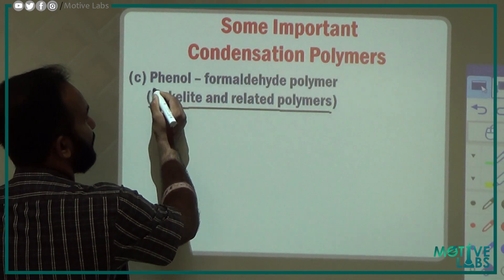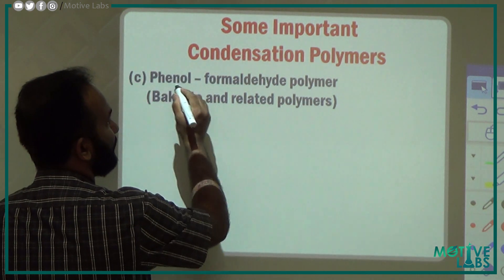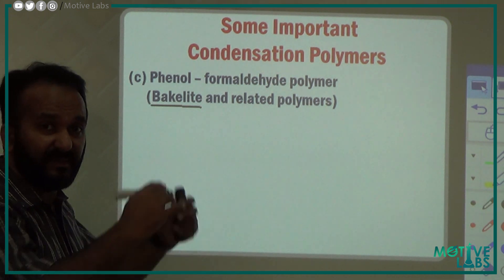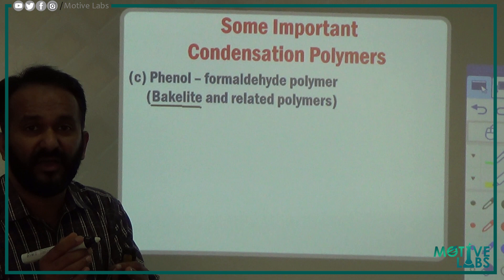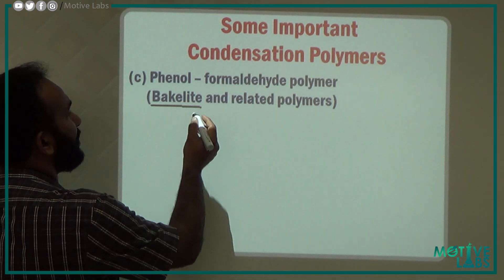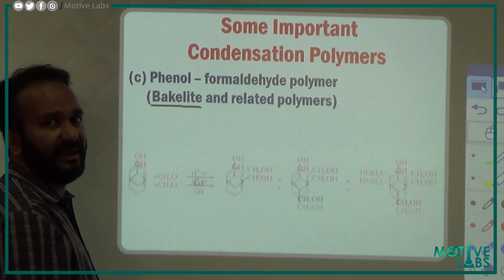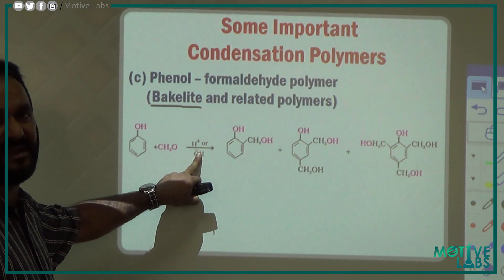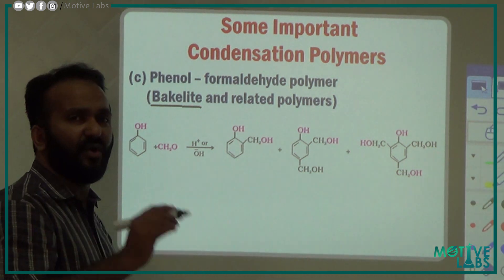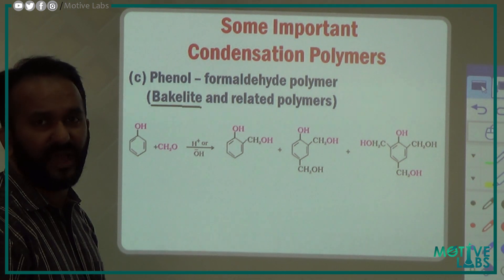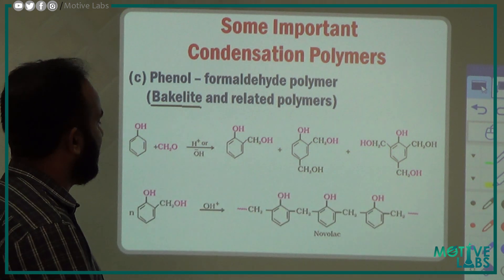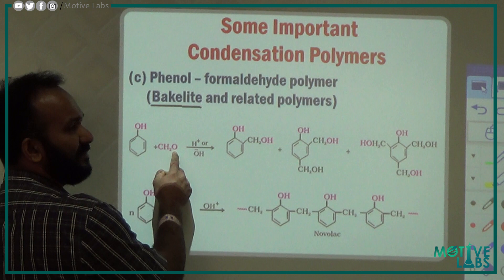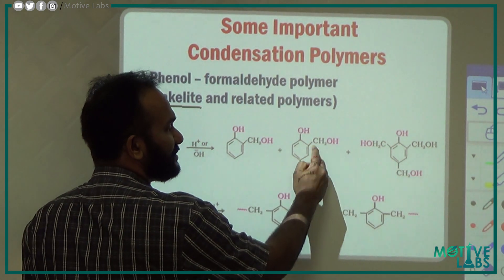The third category is phenol and formaldehyde polymers — also called Bakelite polymers. These are condensation polymers. Phenol reacts with formaldehyde (CH2O) in acidic media. The phenol acts as a polyfunctional compound. In ortho and para positions, the hydroxy derivatives form the compound.